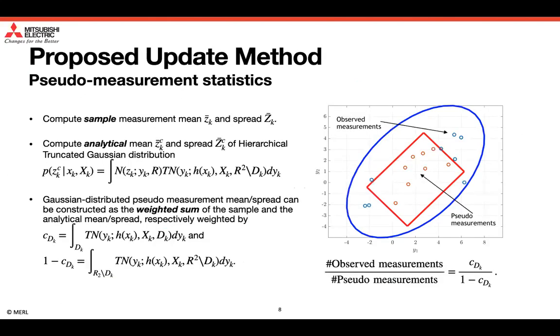Specifically, for the construction of the pseudo measurement statistics, we can observe from the figure on the right that if we draw a certain number of samples from the inside truncated area, such that the ratio between the number of observed measurements and the number of drawn samples satisfy the indicated constraint, these samples together with observed measurements may be regarded as Gaussian distributed measurements. To do so, we first compute the sample measurement mean and spread.